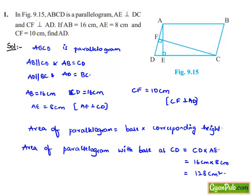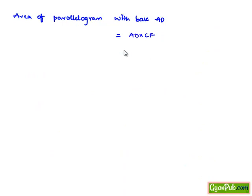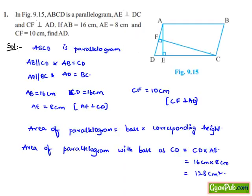Now, let us consider the area of parallelogram with base AD. That will be equal to the base AD and corresponding height CF, which equals AD value we need to find, times CF which is given as 10 cm.